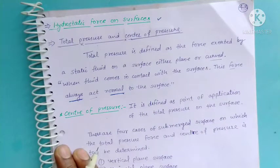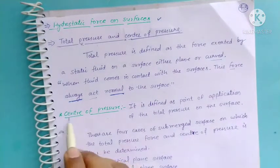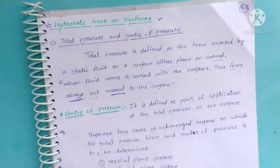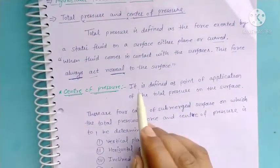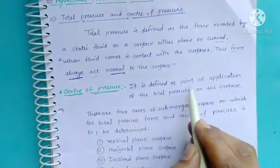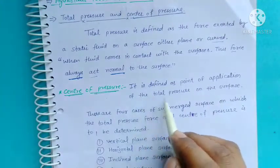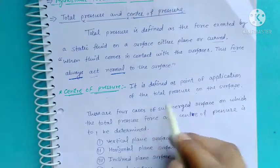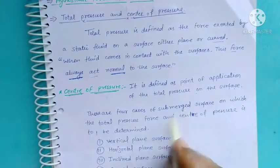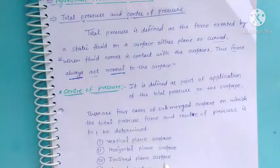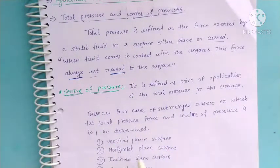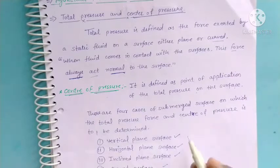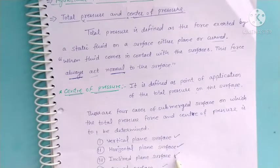Center of pressure is defined as the point on the surface where total pressure acts. There are four types of surfaces: first vertical plane surface, second horizontal, third inclined, and fourth curved surface.